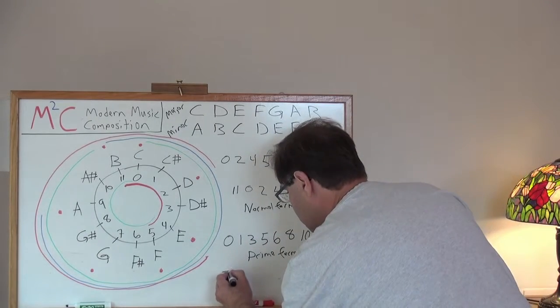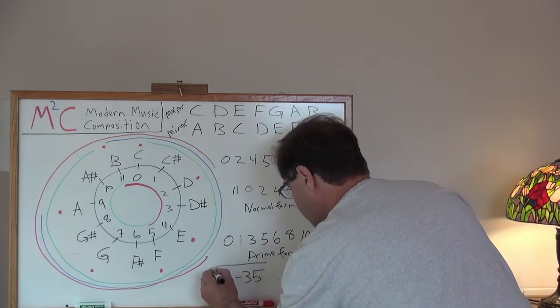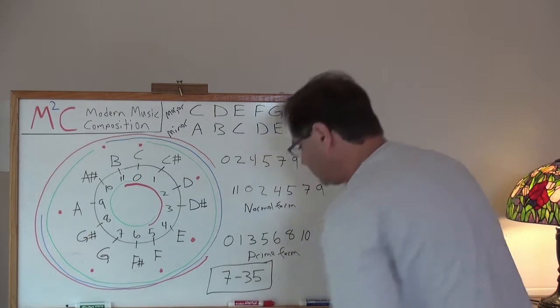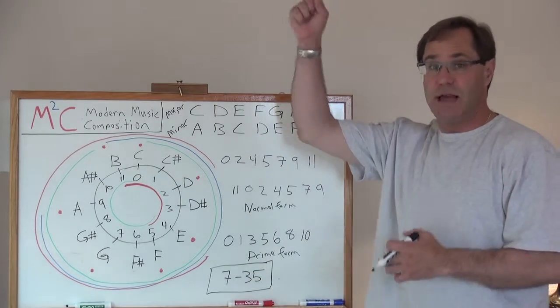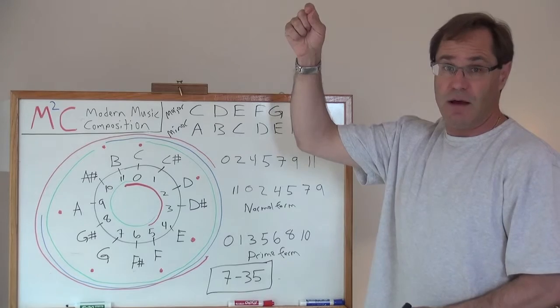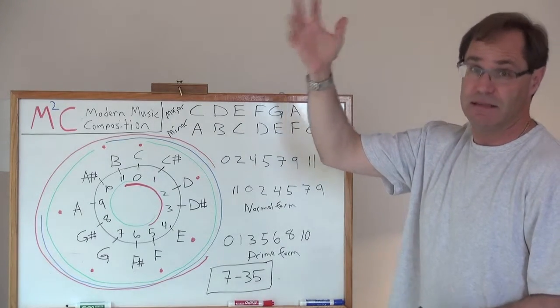It turns out, in terms of set classes, this is named 7-35. Seven because it has seven semitones and 35 because it just happens to be the 35th structure in the series of seven semitone set classes.